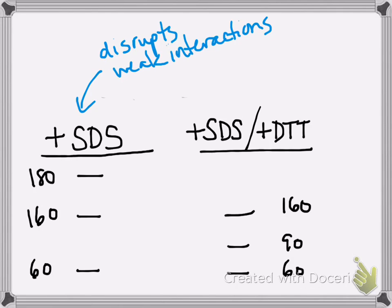So it looks like this protein is broken up into three subunits, according to the data in this part of your experiment. But if you take that same protein sample, and in addition to adding SDS you add DTT, you get a different result.